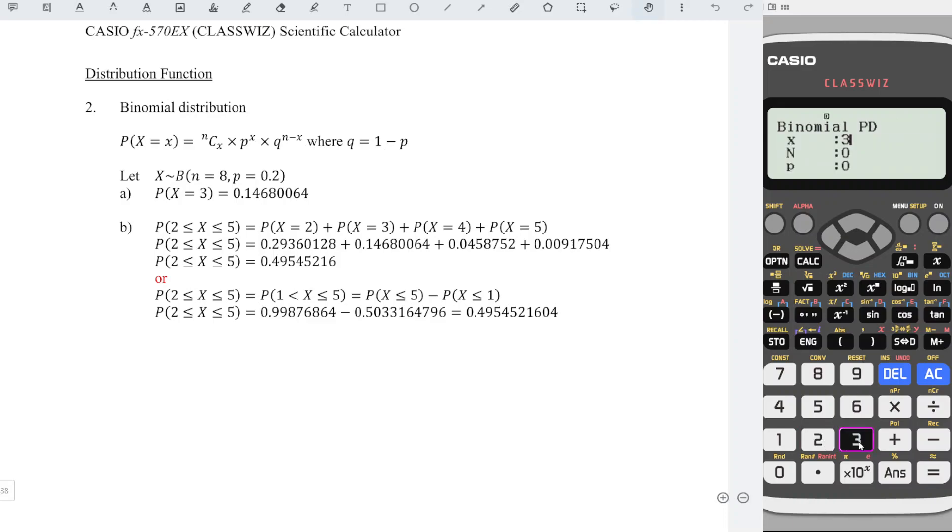x equal to 3, press equal, n equal to 8, equal, p equal to 0.2, equal. Press equal again and we should obtain the correct probability.